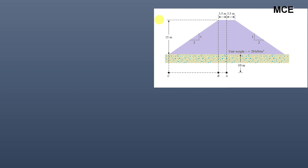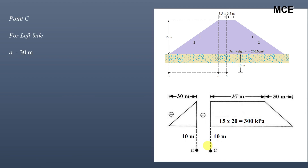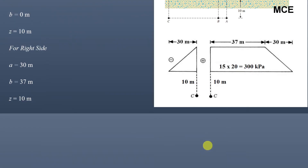For point C, we again make point C the corner of the embankment loading. We shape the embankment loading into one triangle and one trapezoid, and subtract the triangular stress increase from the trapezoidal stress increase to get the stress at point C. For the left triangular side: a = 30 m, b = 0, z = 10 m; for the right trapezoidal side: a = 30 m, b = 37 m, z = 10 m.